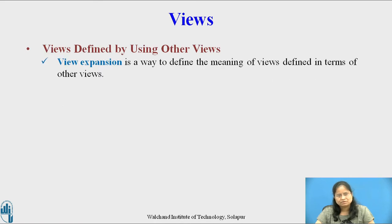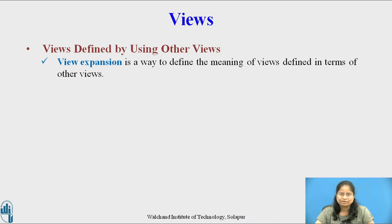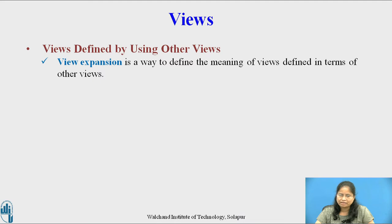View expansion is a way to define the meaning of views defined in terms of other views. The procedure assumes that the view definitions are not recursive — thus no view is used in its own definition, whether directly or indirectly through other view definitions. For example, if view v1 is used in the definition of view v2, view v2 is used in the definition of view v3, and view v3 is used in the definition of view v1, then each of v1, v2, and v3 is called recursive.